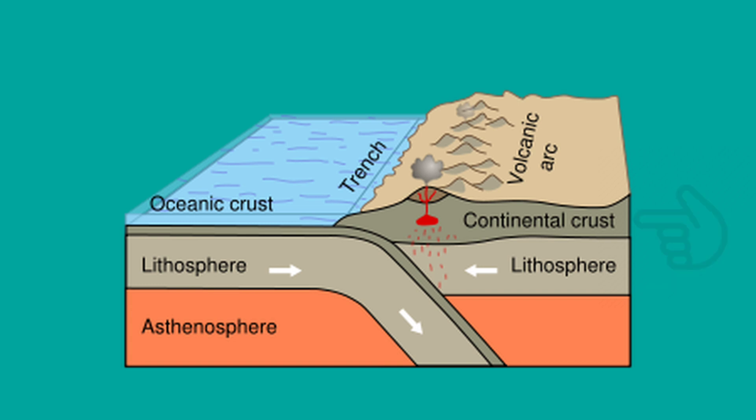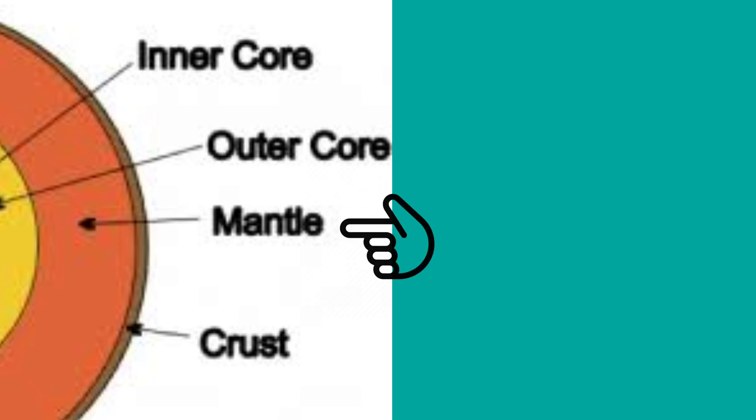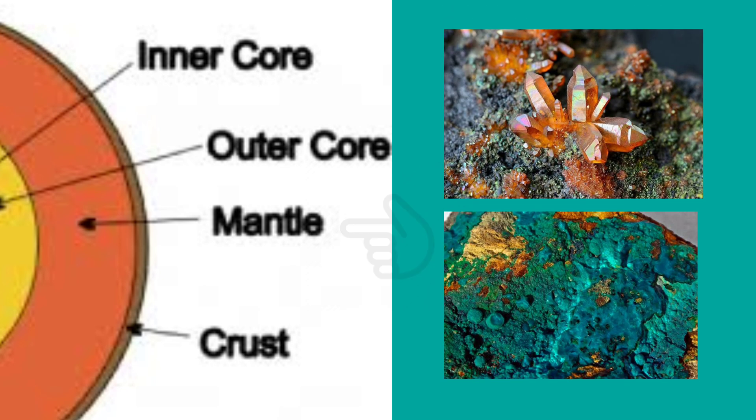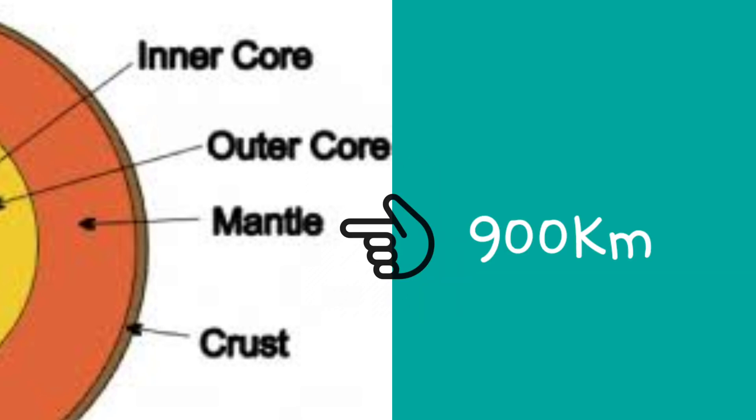The thicker continental crust that makes up the continents is about 15 to 70 kilometers thick. The mantle, which lies just below the crust, is made mostly of silicate rocks rich in magnesium and iron. It is about 2,900 kilometers thick and has increasing temperatures at increasing depth.